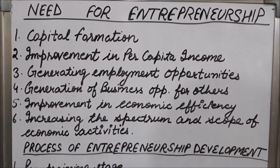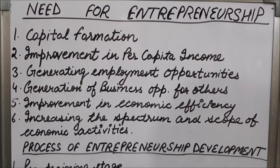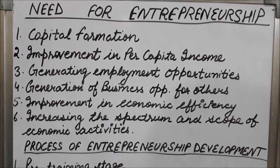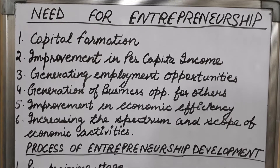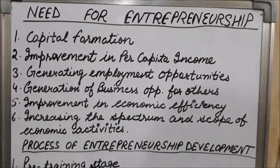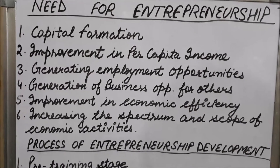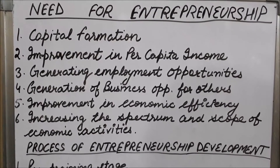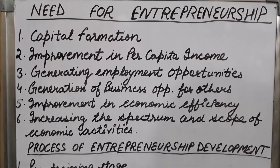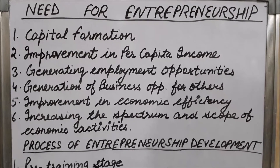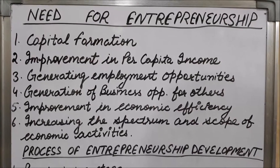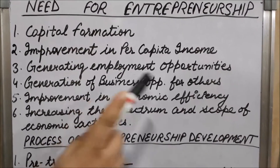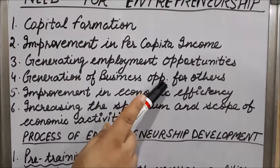Next is generation of business opportunities for others. Entrepreneurship creates business opportunities firstly for the suppliers of inputs and secondly for the marketers of output. For example, when a pen manufacturing firm is started, it creates opportunities for refill suppliers on the one hand, and for wholesalers and retailers of stationery on the other hand. So in this way, entrepreneurship generates business opportunities for suppliers of inputs and for marketers of output.